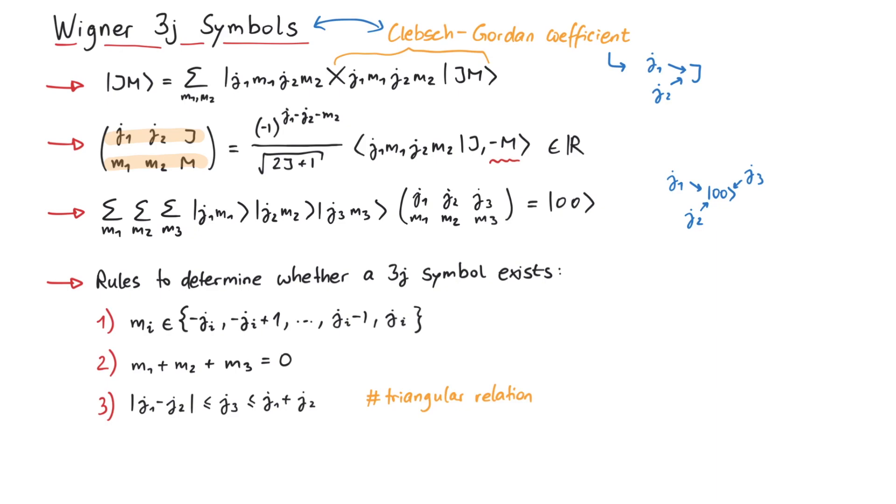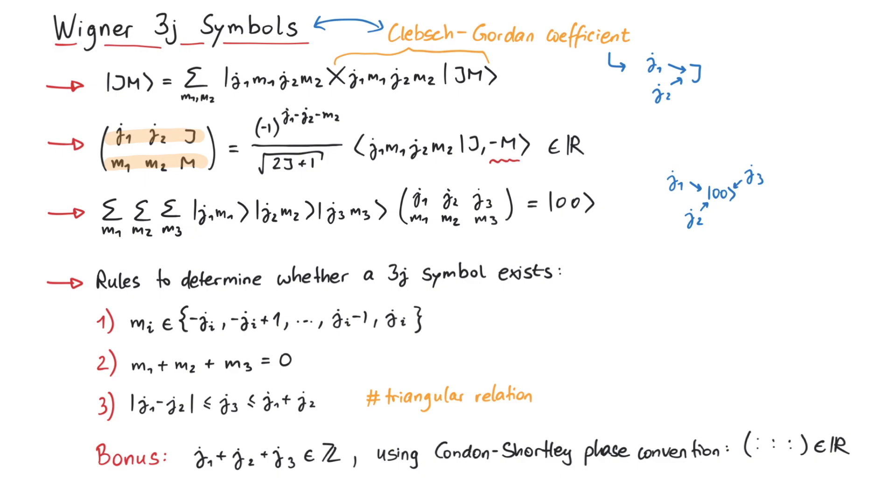There are two more things we can mention. First, the sum of the values in the upper row is always a whole number. Second, using the Condon-Shortley phase convention, all 3j symbols are real numbers, just like the Clebsch-Gordon coefficients.